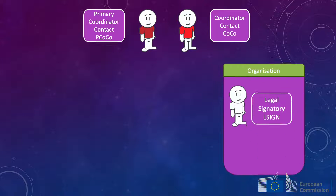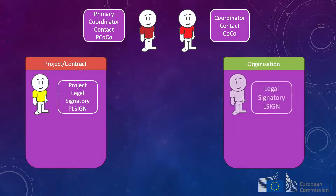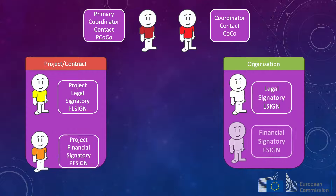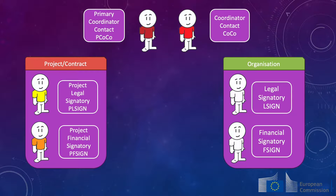Please note that the L sign cannot sign any contract and the F sign cannot sign any financial statement until they are appointed in a specific contract or project by the primary coordinator contact.